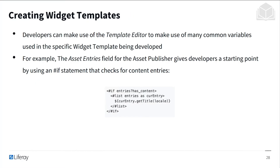When creating widget templates, developers can use a template editor to make use of many common variables used in the specific widget template being developed. This gives the developer a lot of power to use things that might conventionally be found in the backend, but are already built into the templating language. For example, the asset entries field for the asset publisher gives developers a starting point using an if statement that checks for a content entry — so if entries has content, this is available directly from the editor itself without fetching from the backend.